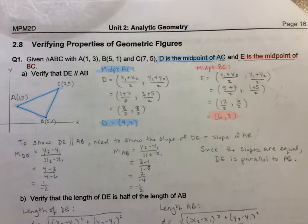Then what I needed to do to show that they're parallel, I found the slope of DE which was negative one-half and I found the slope of AB which was also negative one-half. Since the slopes are equal to each other, DE is parallel to AB.